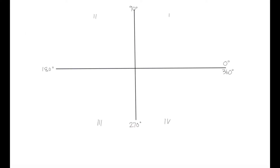We ended off our last video with a discussion of the different quadrants of the Cartesian plane. Here we have another example of a Cartesian plane, with our x-axis on the horizontal and our y-axis on the vertical. We have positive x values on the right, negative x values on the left, positive y values on top, and negative y values on the bottom. Numbers aren't drawn in just to make it easier to visualize the triangles we'll be drawing, but you can imagine all values from 0 to positive and negative infinity along each axis.